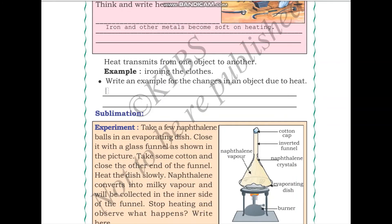Next, heat transmits from one object to another. For example, ironing of clothes — the iron is heated either by coals or by electricity and this heat is transferred to the clothes to remove the wrinkles. Write an example for changes in an object due to heat. One example is cooking of food. Food becomes cooked when we supply it with heat.